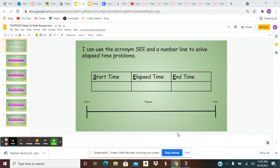On a timeline or a number line, the start will be on the left-hand side, just like when we read. The end will be on the right-hand side. The elapsed time is in the middle because this shows the time that has passed between the start and the end.